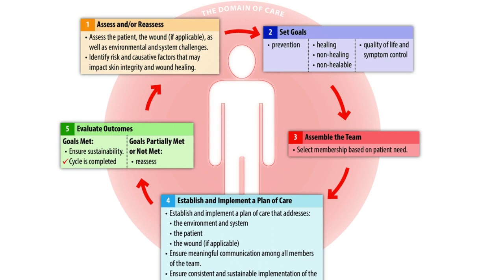It did make things a lot more clear. So we'll start with the circle of care for all wounds that you should be following every time you have a wound. This is best practice standard care. Number one: assess and/or reassess. Number two: set goals. Number three: assemble a team. Number four: establish and implement a plan of care. And number five: evaluate outcomes.